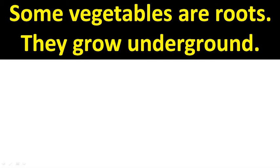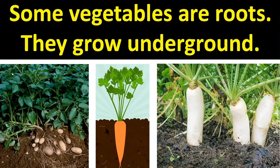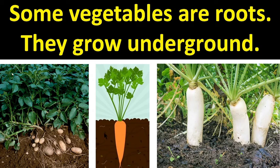Some vegetables are roots — they grow underground. We can see potato, it grows underground. Radish also grows underground. All these vegetables are roots; they grow underground.